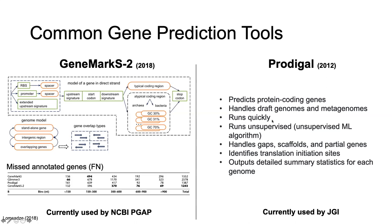Prodigal, on the other hand, is a slightly older tool, coming up on its 10-year anniversary. It runs quickly and in an unsupervised manner, using a machine learning algorithm to determine the best way to call proteins in your genome. It can handle gaps, scaffolds, and partial genes, will identify translation initiation sites, and provides a detailed summary statistic that's useful until you're comfortable with the tool's predictions.